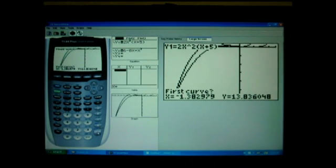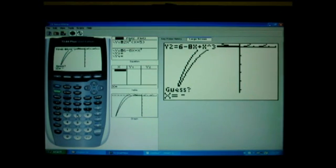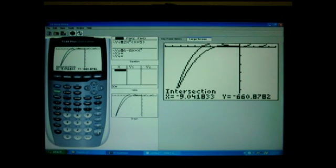Calc five, first curve, second curve. Let me try negative eight. See if that brings us over here a little bit more. Yeah, there it is. So there's my other point at negative 9.042.